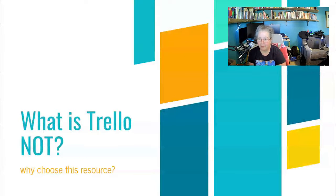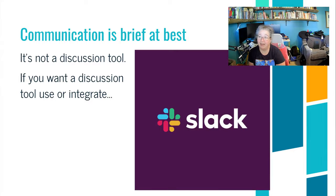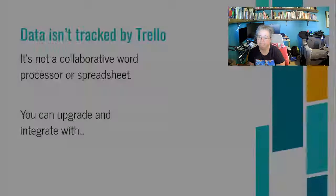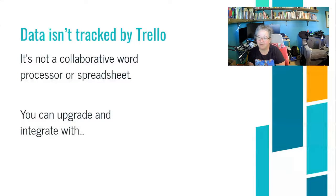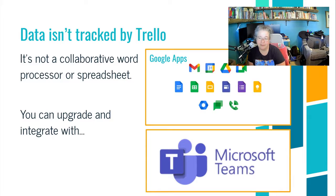Trello is not a few things, and I wanted to make sure I was clear about those. The communication inside Trello is brief at best — these cards are small, the font is limiting, and so it's not really a discussion tool. It's more like a checklist: I see you there, or can someone help me with this? If you want a discussion tool, you can integrate Slack, which is the other number one app most businesses are using now. Data isn't also tracked by Trello, specifically not at the free version. The more you upgrade, the more you can integrate. So Trello wouldn't take the place of a word processor or a spreadsheet, but it can integrate with things we're already using, like Google Apps or Microsoft Teams.